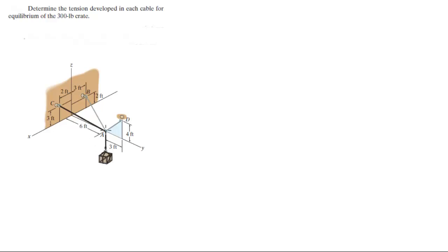So we have the force vectors at A. We have a tension going this way, a tension going this way, and a tension going straight down. Basically what we're going to do is find all the unit vectors, and everything becomes much easier.